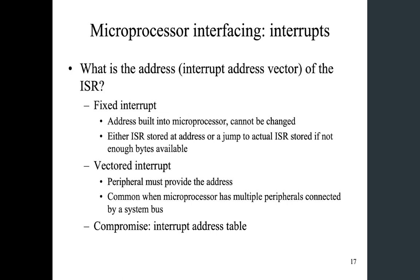There are several ways to find the ISR, especially the entry address of the ISR — we call it the interrupt address vector. The very basic one is fixed interrupt. You find this more often in low-end microcontrollers where there's only one interrupt, so there's no need to differentiate what kind of interrupt. This address is built into the processor and cannot be changed. The ISR can be stored at that address, or you can put a jump instruction there. The address is something like 004 or 008 — that's the fixed interrupt address.